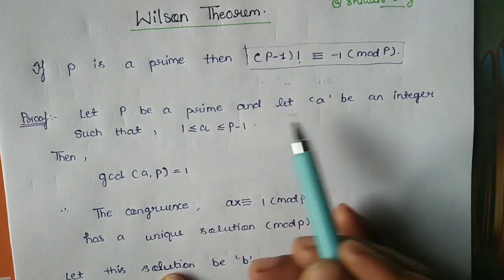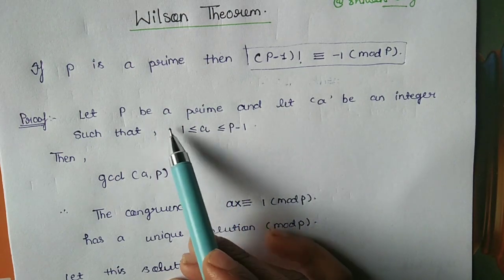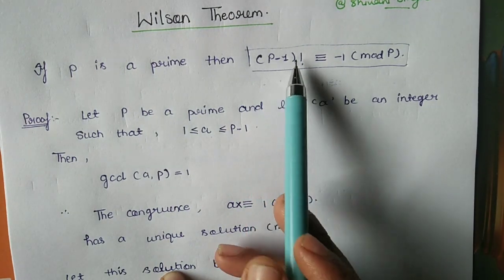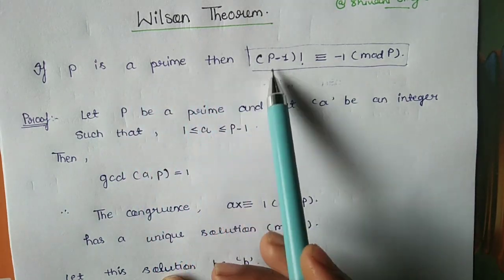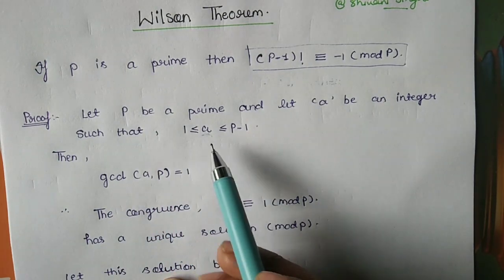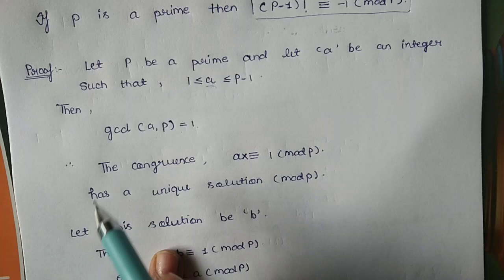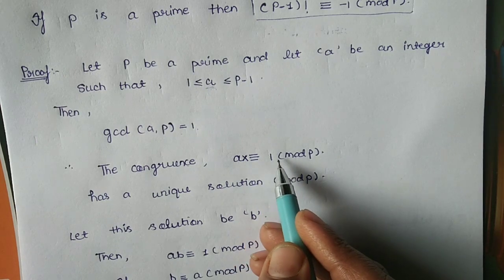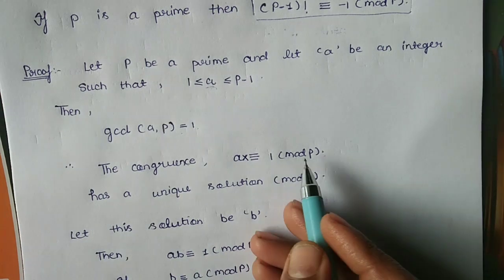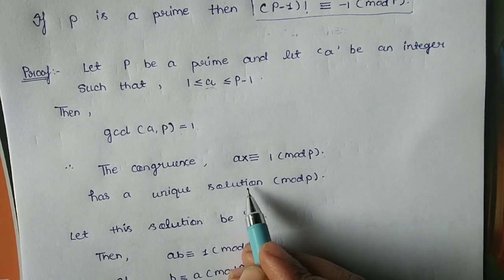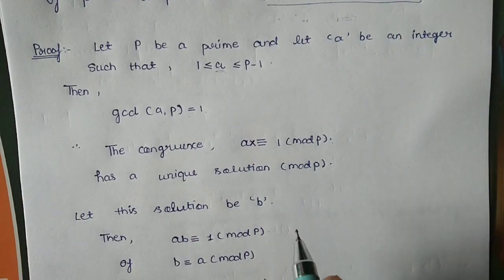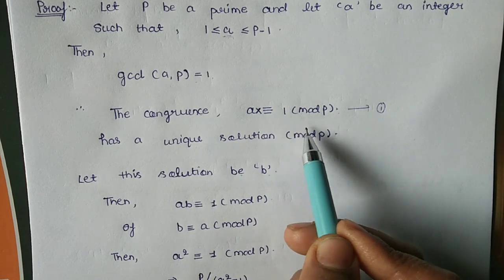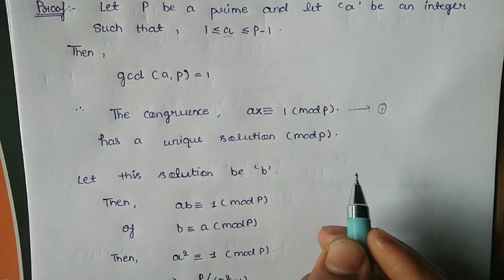Proof: Let p be a prime and let a be an integer such that 1 ≤ a ≤ p-1. Since p is prime, gcd(a, p) = 1. Therefore, the congruence ax ≡ 1 mod p has a unique solution mod p. Let this unique solution be b, so b ≡ a mod p.